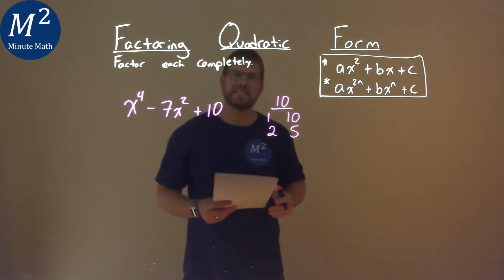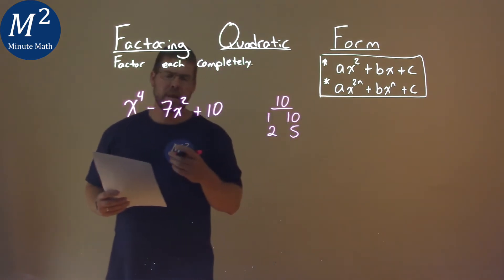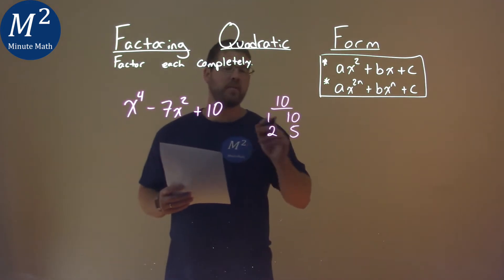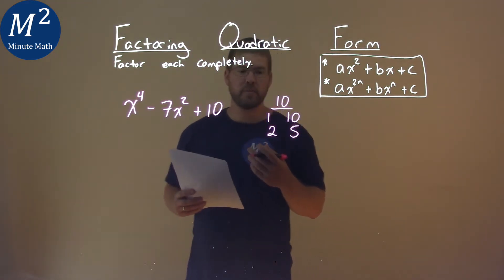Now, our b value is negative. Since our b value is negative, that means one of these numbers within a pair has to be negative. Or, sorry, both have to be negative.